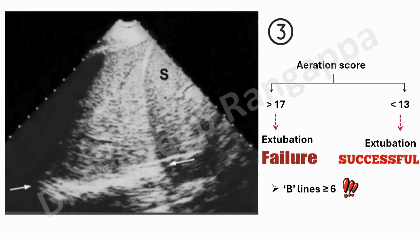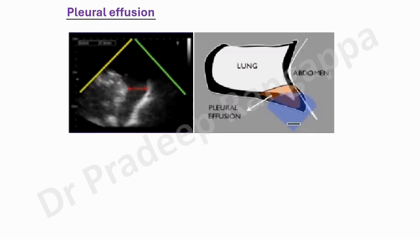If you don't want to score every zone — it takes a lot of time — the simpler approach is: look for confluent B-lines. If B-lines number more than six or spacing is less than 3cm, you know you cannot extubate and need to dry the lungs. For a detailed study approach, you score each zone and check whether it's above 17 or below 13. After the aeration score, look for pleural effusion.